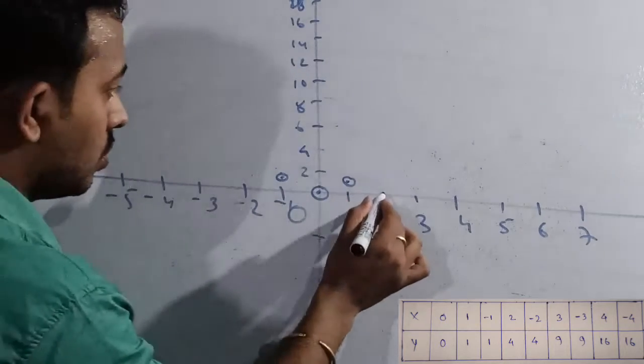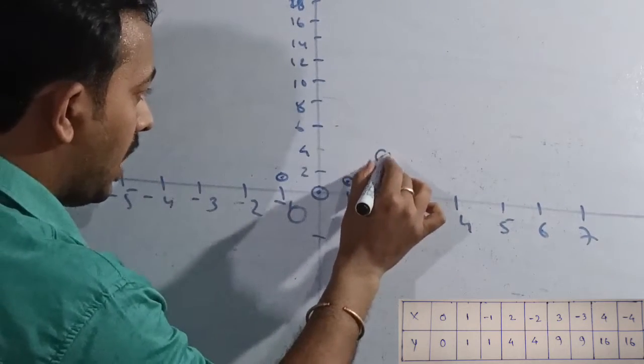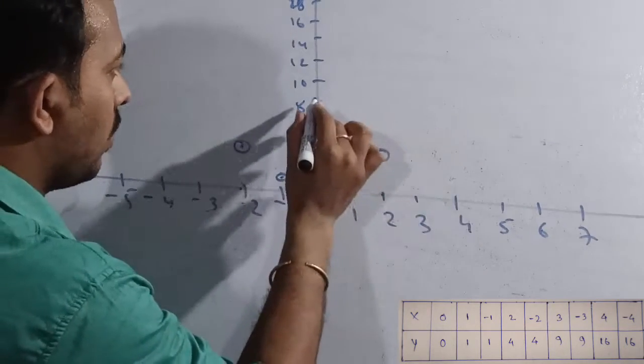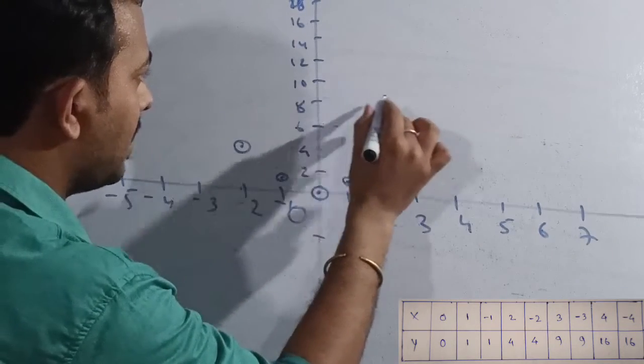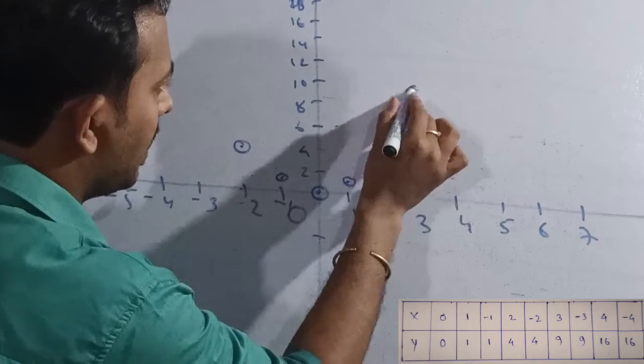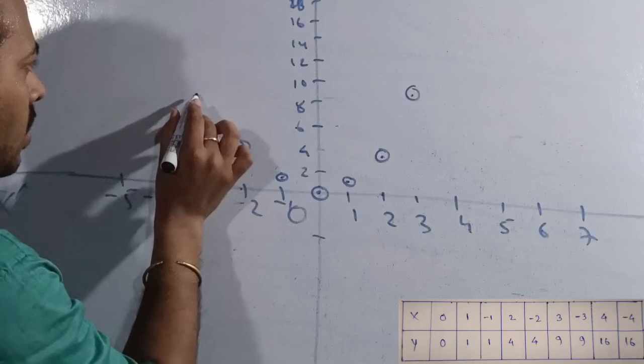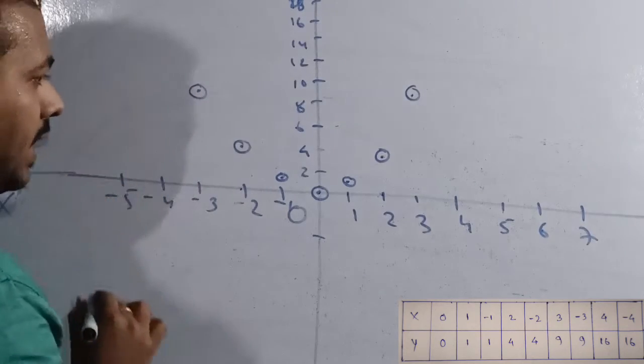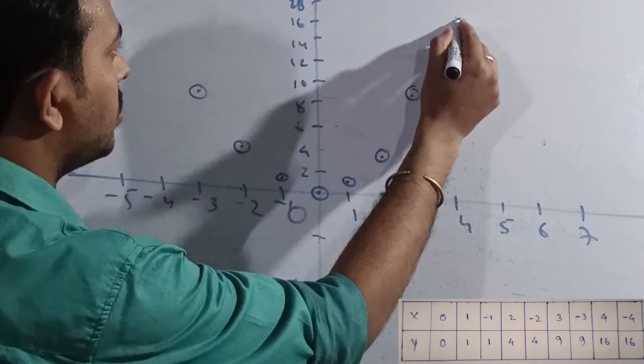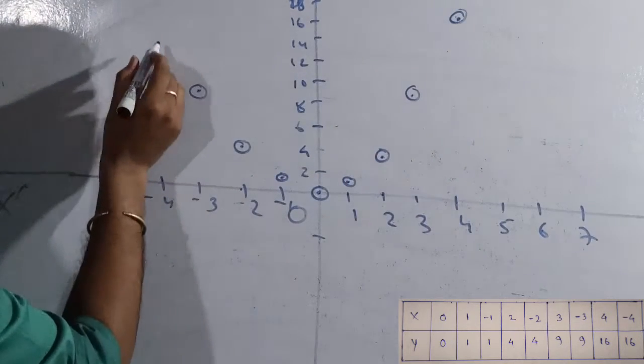Two positive four. Four here, and minus two again positive four. Next, three nine. Nine would be between eight and nine, so here we have three nine. This side we'll get minus three positive nine. Next, four sixteen. Four here, we have sixteen, and minus four also gives you positive sixteen.